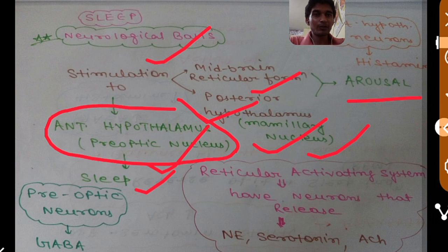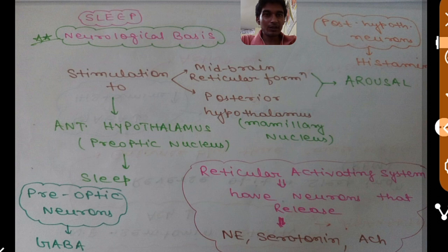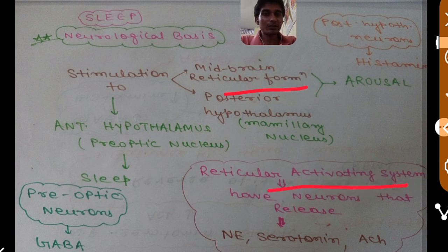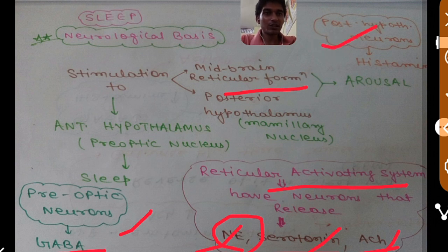The neurons present in the midbrain reticular formation, that is the reticular activating system, release three types of neurotransmitters: norepinephrine, serotonin, and acetylcholine. The preoptic neurons present in the anterior hypothalamus release GABA, and the neurons present in the posterior hypothalamus release histamine.